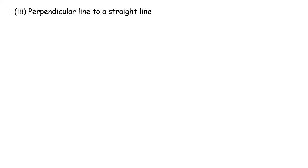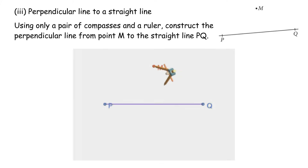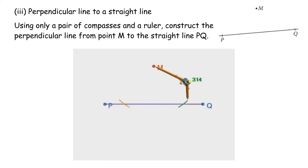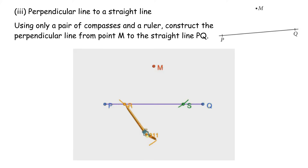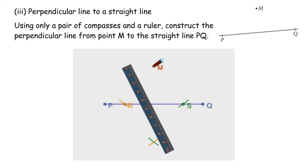3. Perpendicular line to a straight line. Using only a pair of compasses and a ruler, construct the perpendicular line from point M to the straight line PQ. 1. With the same distance on the compass from M, construct two arcs intersecting PQ. Label the two points of intersection as R and S. 2. With the same distance on the compass from R and from S, construct arcs that intersect. 3. Draw a line joining M and the point of intersection of the arcs.